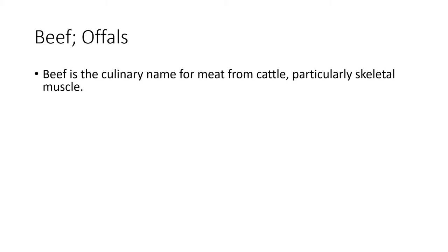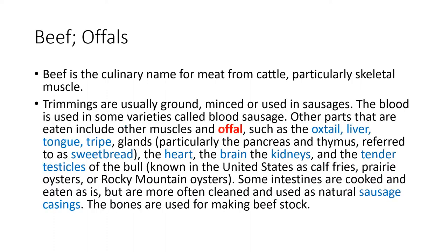Beef and offal. What is beef? Beef is a culinary name for meat from cattle, particularly the skeletal muscle. So the meat of cattle is called beef. The remains are usually ground and minced, used in sausages, etc.